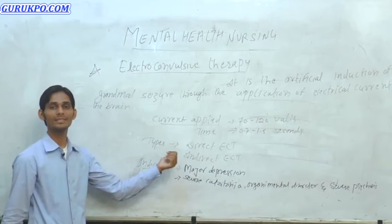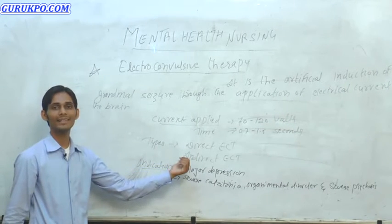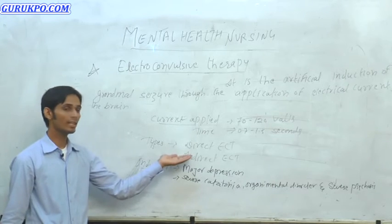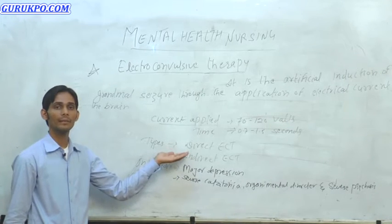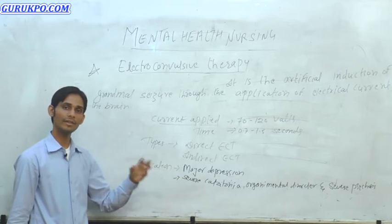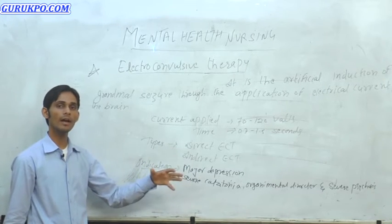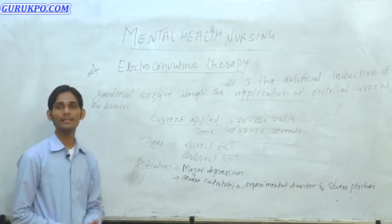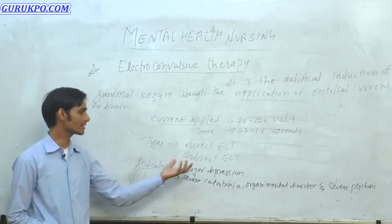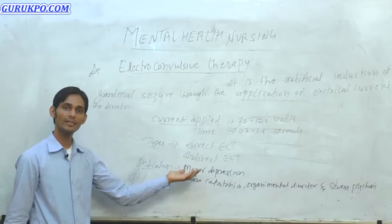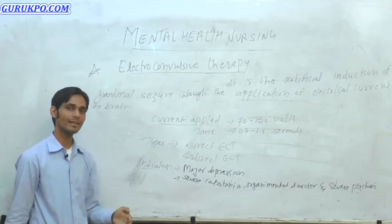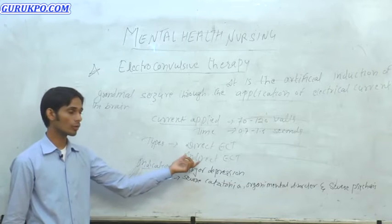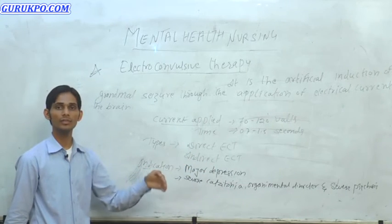Types of ECT are classified into two types: direct ECT and indirect ECT. In direct ECT, without any muscle relaxants or anesthesia, we directly provide ECT to the client. Indirect ECT is also known as modified ECT. In this type, we give both muscle relaxants and anesthesia to the client, and it is the most commonly used form.